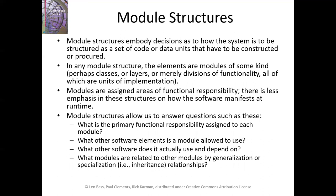Module structures embody decisions as to how the system is to be structured as a set of code or data, whether built or obtained. In any module structure, the elements are modules of some kind — perhaps classes, layers, or divisions of functionality — which are units of implementation. Modules are typically assigned areas of functional responsibility, with less emphasis on how the software manifests at runtime. Module structures allow us to answer questions like: what functionality is assigned to each module, what other software elements does that module interact with and depend on, and what are the relationships between the different modules?